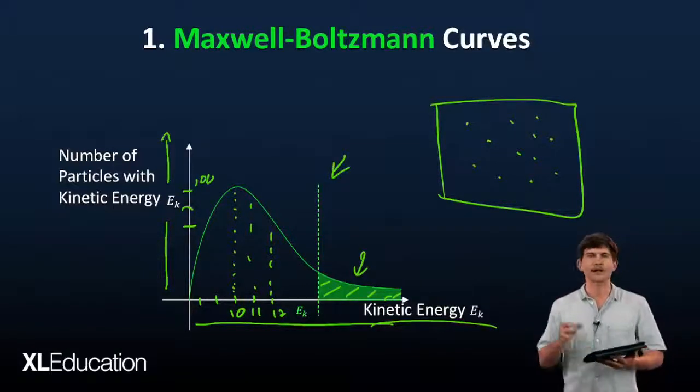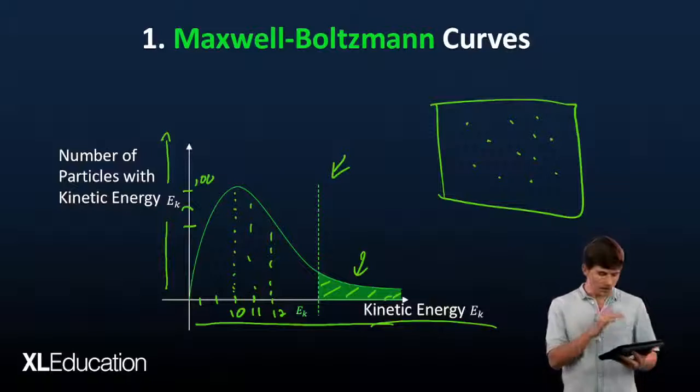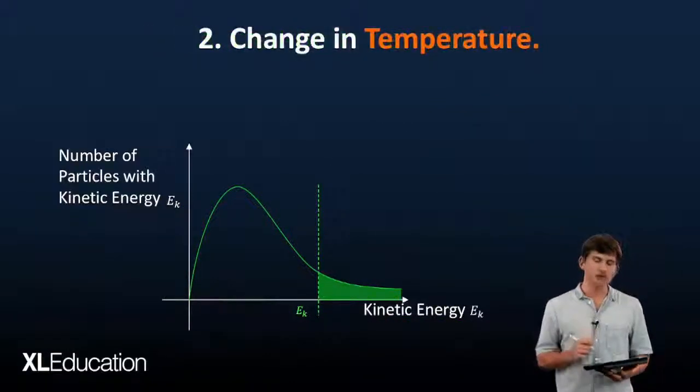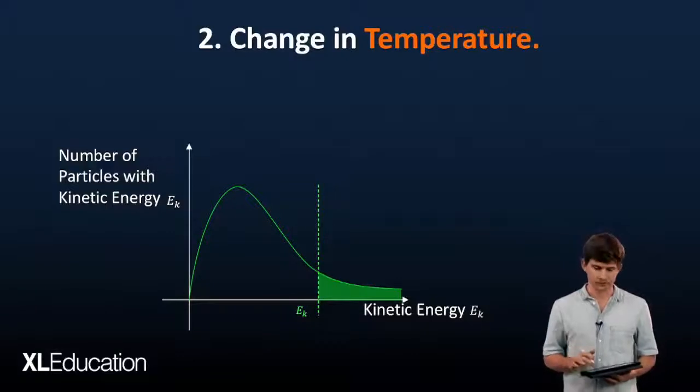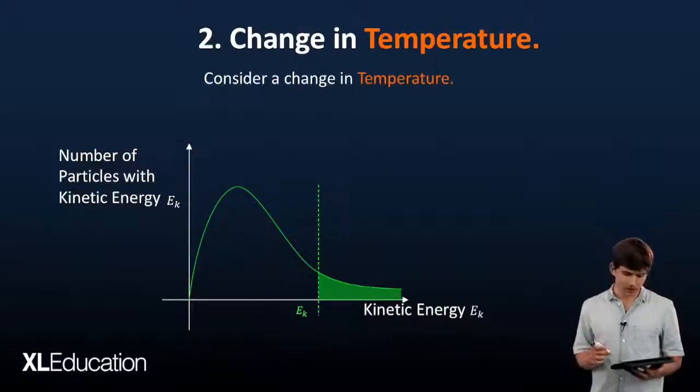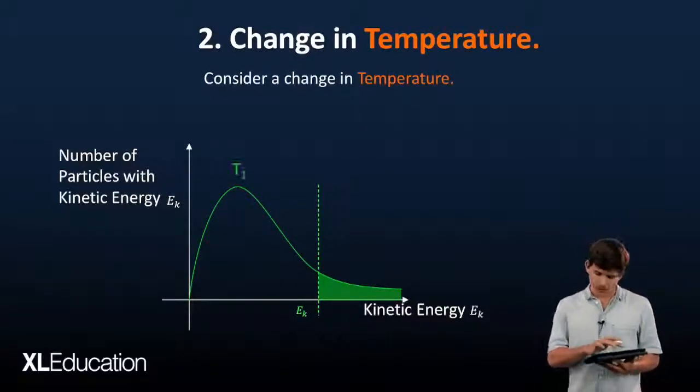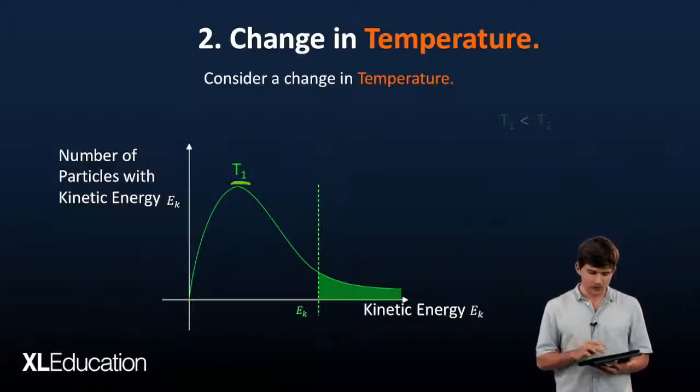Let's quickly look at how we affect the rate of reaction using the Boltzmann Curve. Consider a change in temperature. We have our original Boltzmann Curve with temperature T1. Follow along with me now.